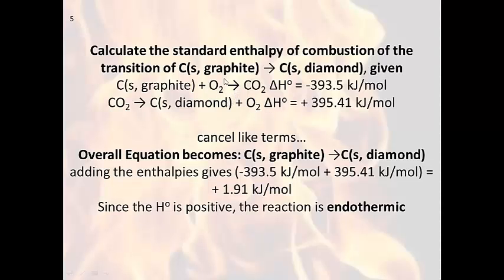On the left, or the reactant side, we have one mole of oxygen, and in this reaction we have one mole of oxygen on the right, so we can cancel those. We also have one mole of carbon dioxide on the right and one mole of carbon dioxide on the left, so we can cancel those as well. The overall equation becomes the equation we were looking for: graphite to diamond. We simply add up the enthalpies to get the enthalpy of the reaction. Since this is a positive number, it's an endothermic reaction requiring energy to proceed.